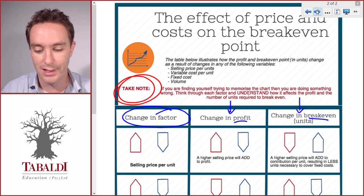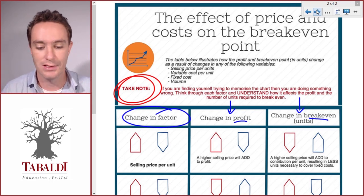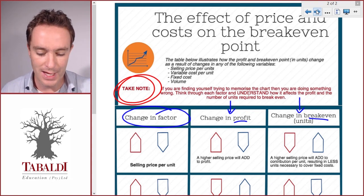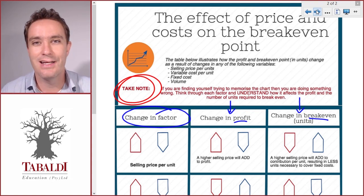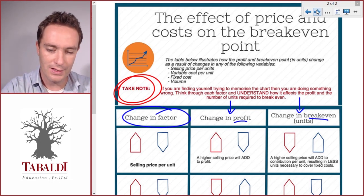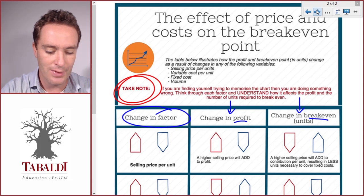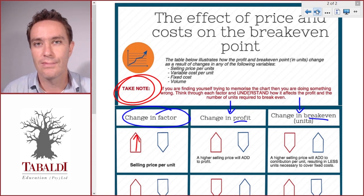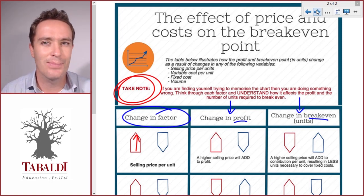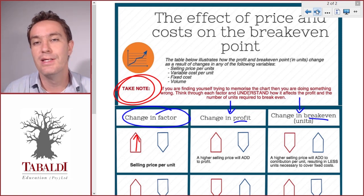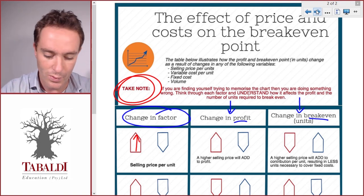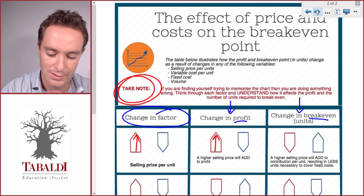Let's look at the first example. This is a test to see whether you understand cost, volume, profit analysis — how the factors affect the profit. If, in the first case, our selling price per unit increases, what will the effect on our profit be? If the selling price per unit increases, our total sales value will increase, and that means we'll make more profit. So that's an easy one.